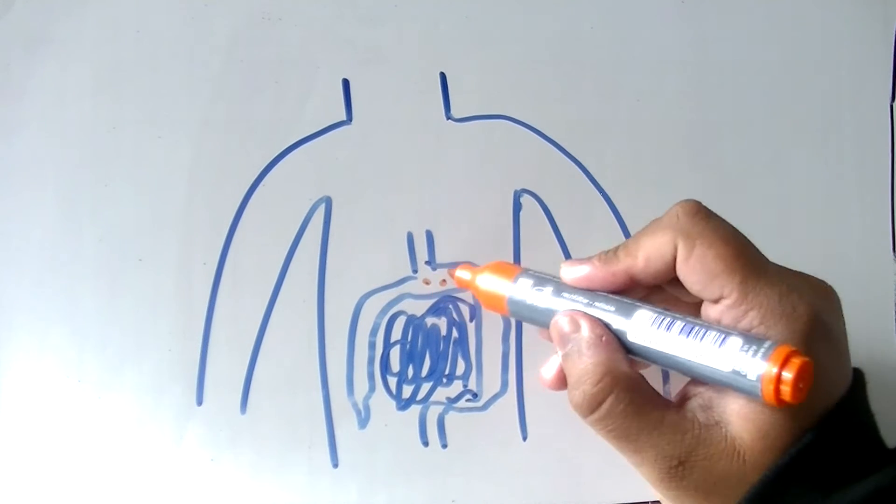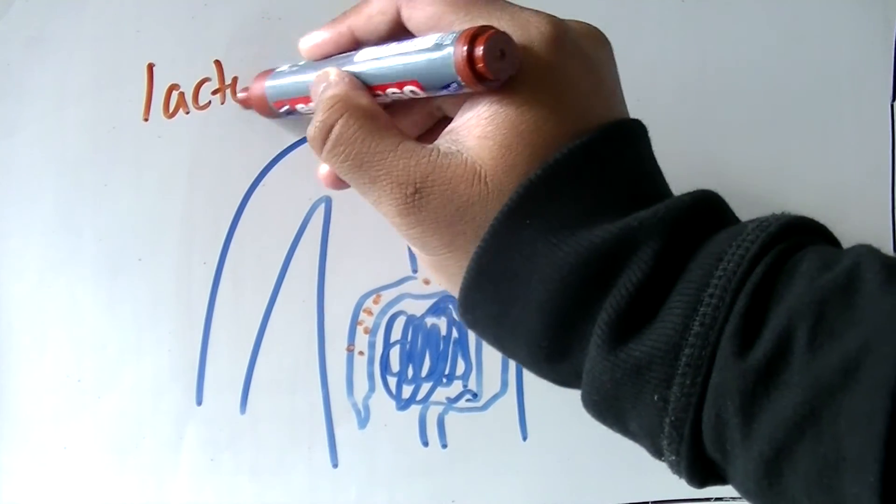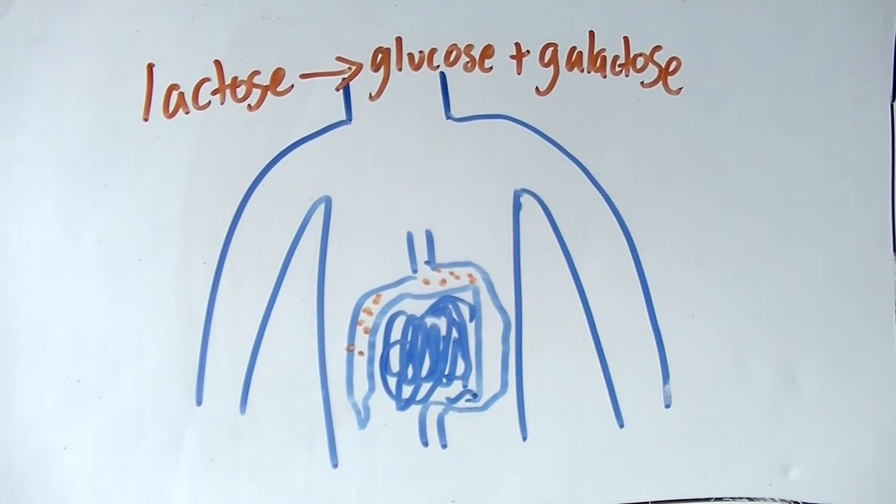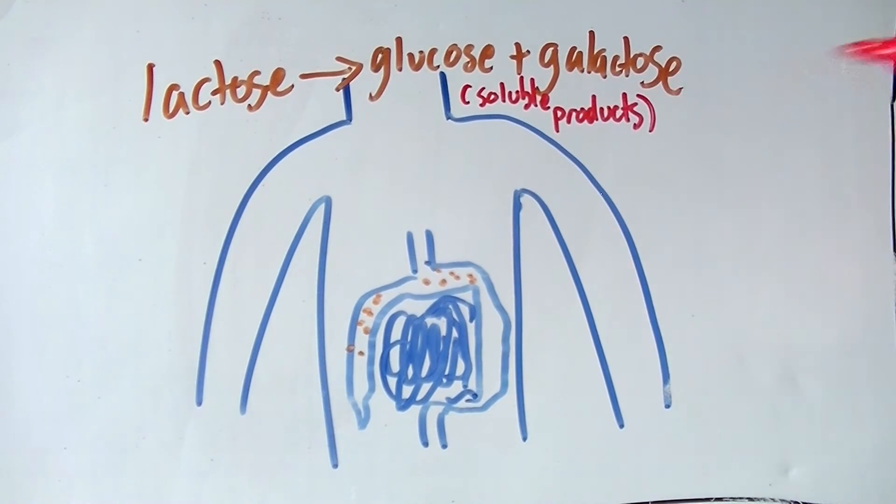This can cause diarrhea as the soluble molecules lower the water potential of the material in the colon. Glucose and galactose are soluble, which therefore will make water enter the small intestine, which could make your feces watery.